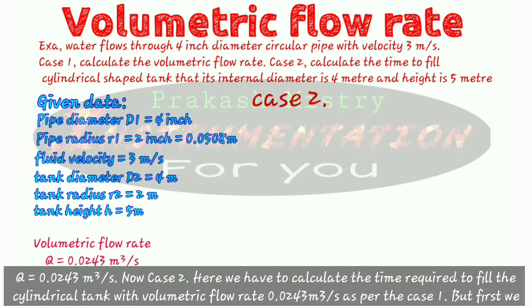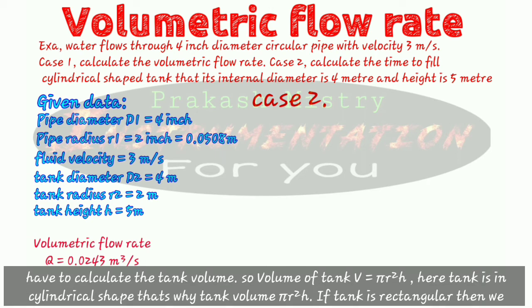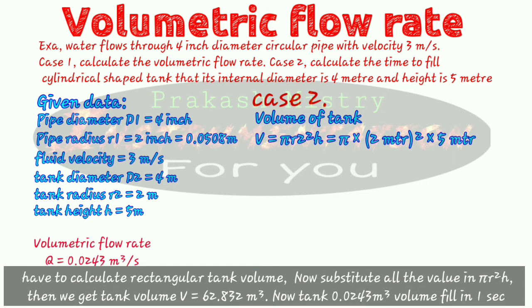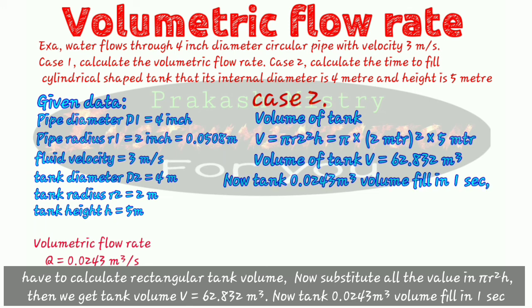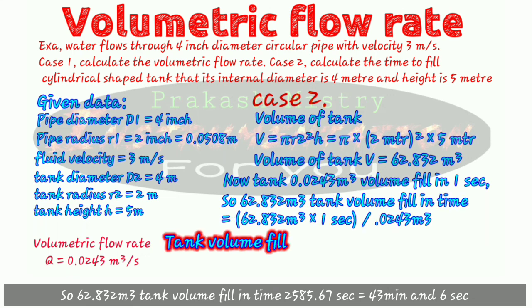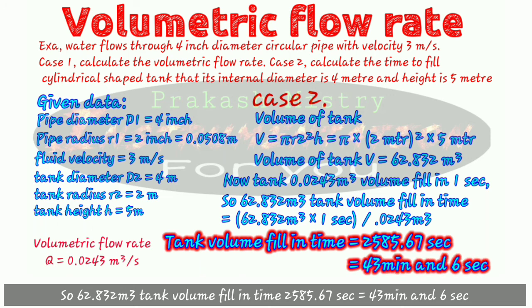In case two, we calculate the time required to fill the cylindrical tank with a volumetric flow rate of 0.0243 cubic meters per second from case one. First we calculate the tank volume: V equals pi R squared times H. Since the tank is cylindrical, volume equals pi R squared H. Substituting all values, the tank volume V equals 62.832 cubic meters. Since 0.0243 cubic meters fills in one second, the 62.832 cubic meter tank fills in 2585.67 seconds, which equals 43 minutes and 6 seconds.